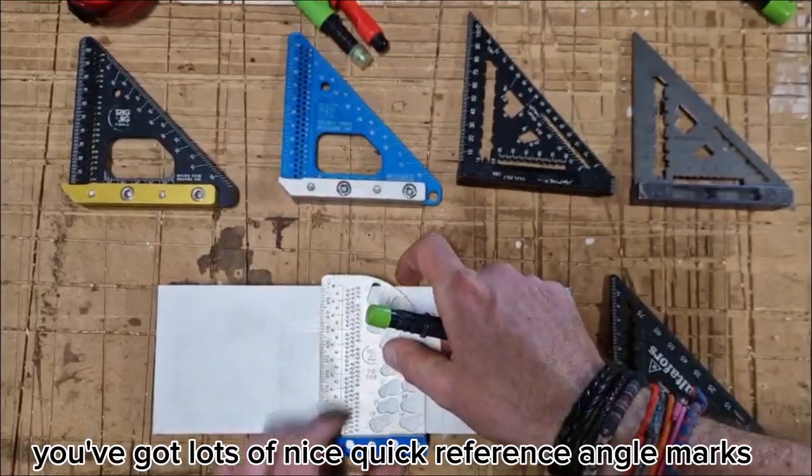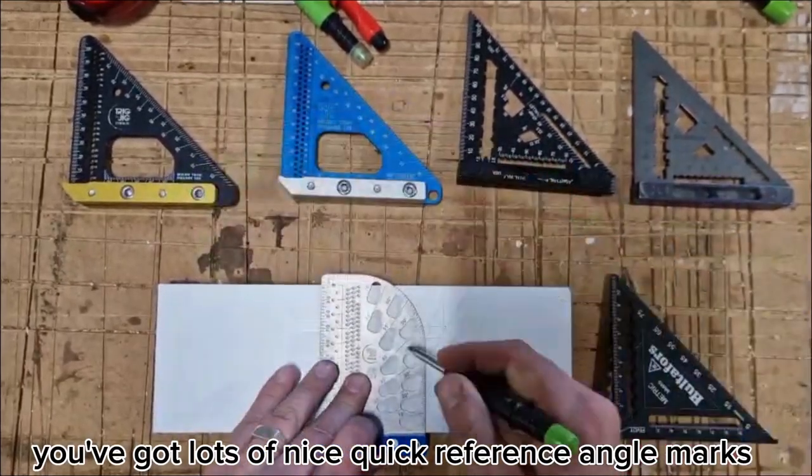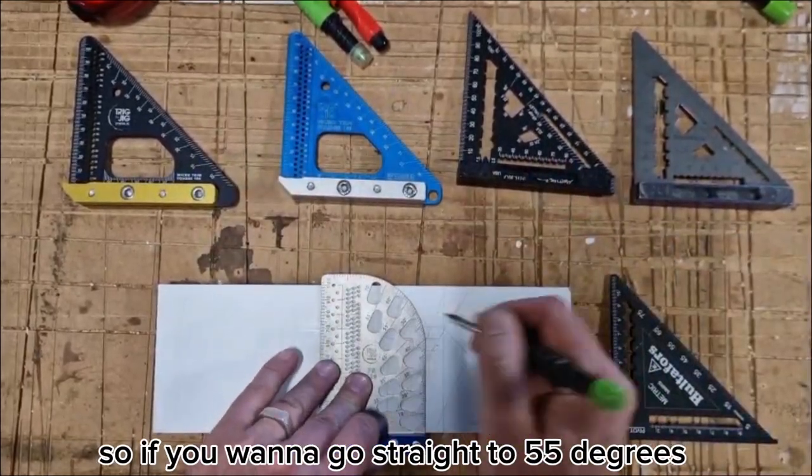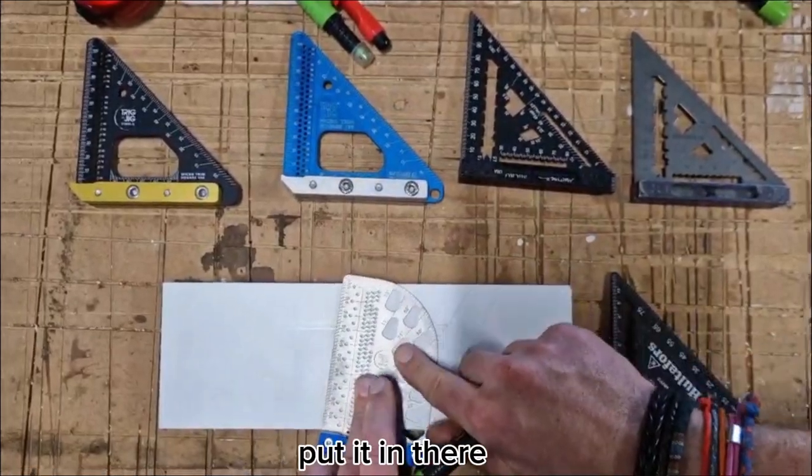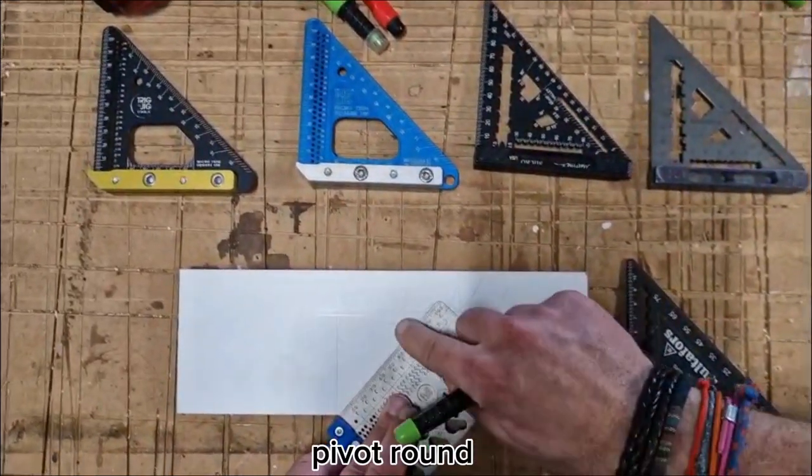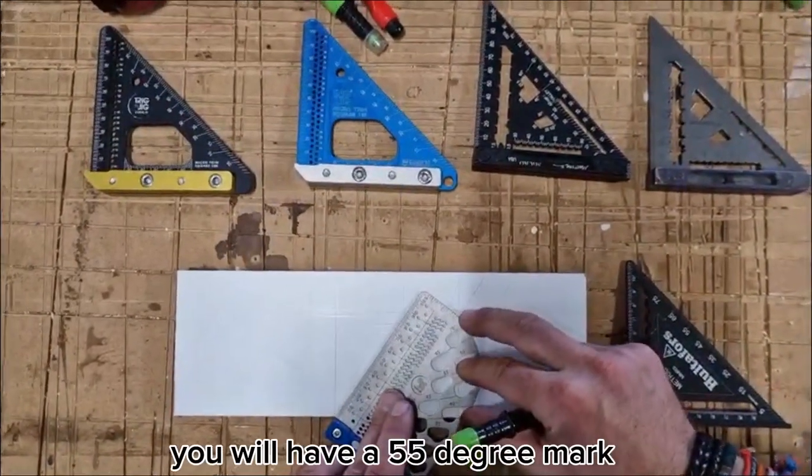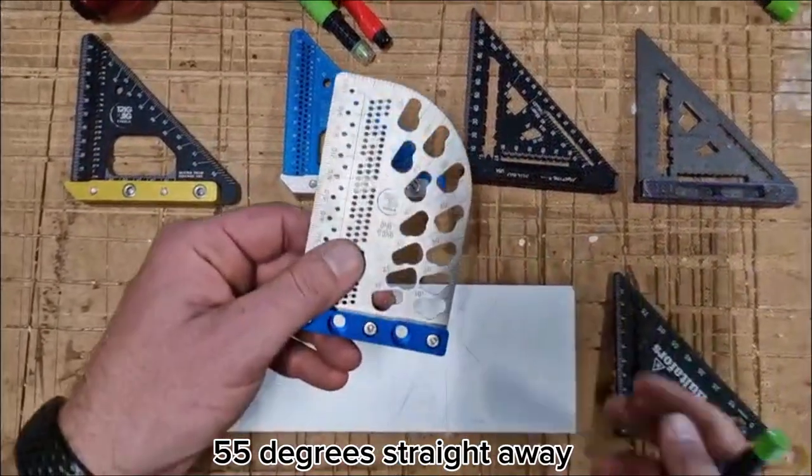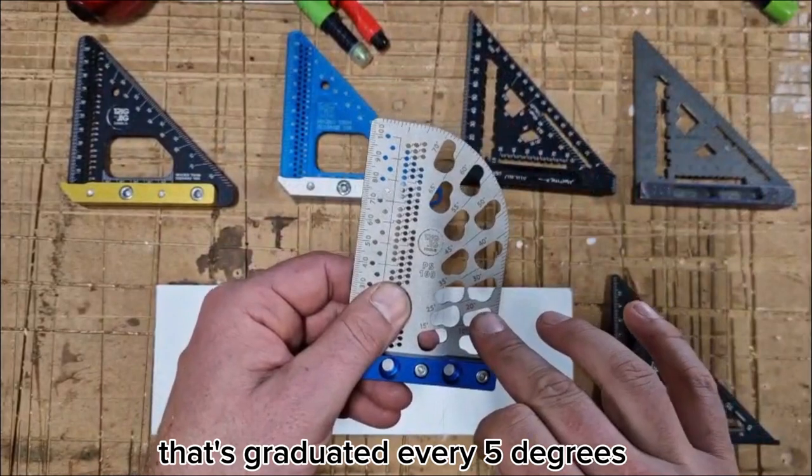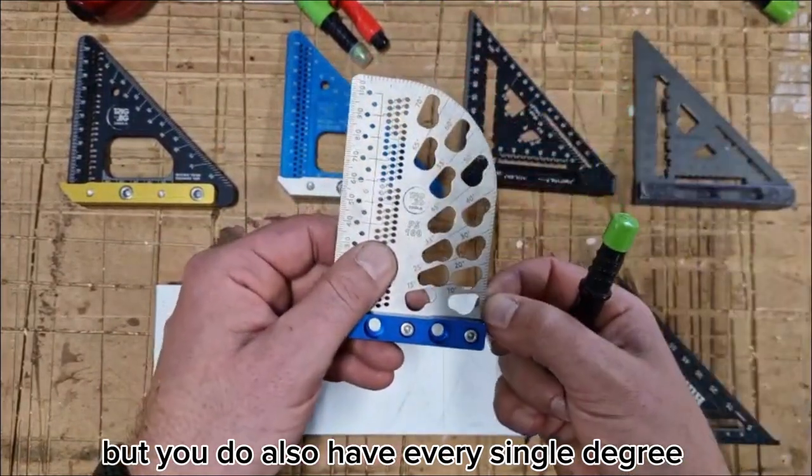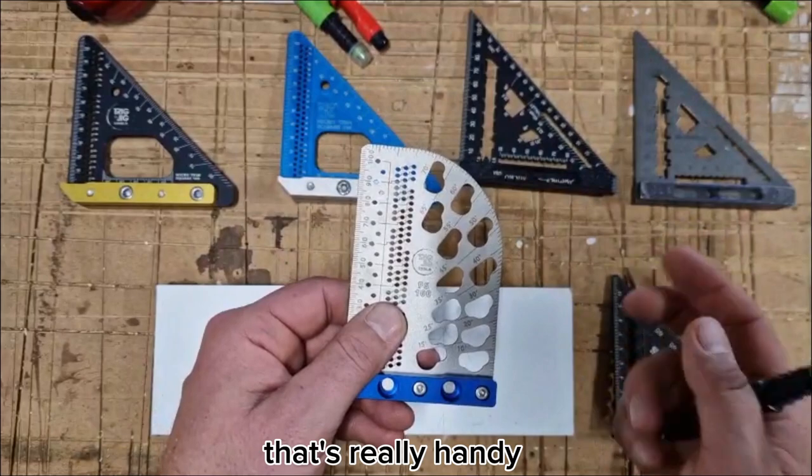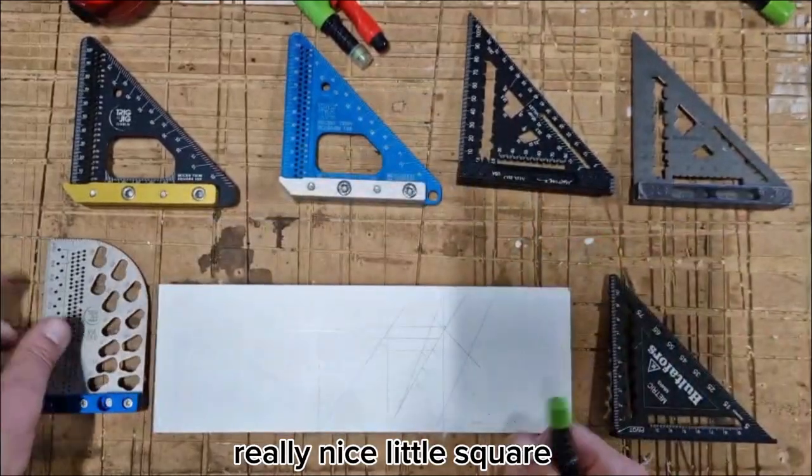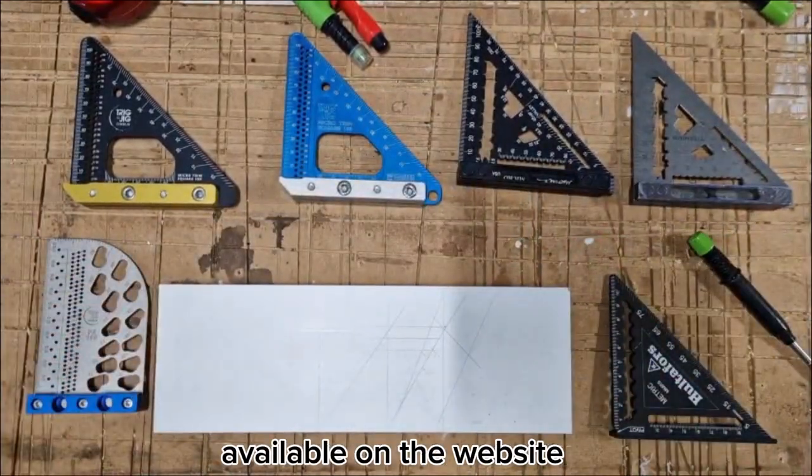Down the side here you've got lots of nice quick reference angle marks. So if you want to go straight to 55 degrees, put it in there, pivot round, you've got a little 55 degree mark. That's graduated every 5 degrees but you do also have every single degree on the outside here. Really handy, really nice little square. These are the current offerings available on the website.